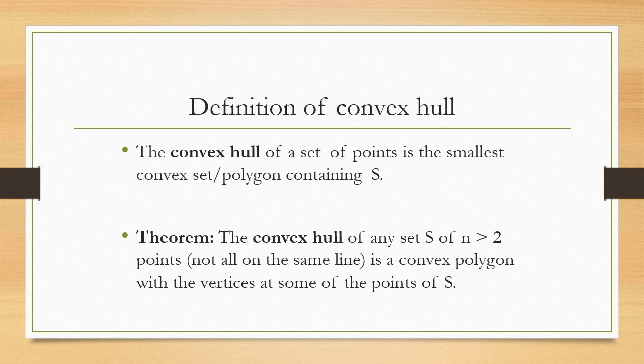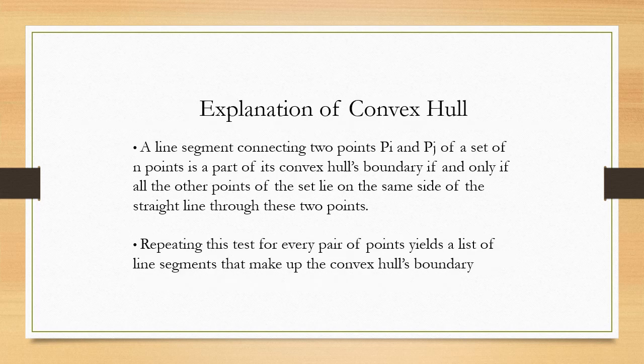This is the explanation of convex hull. A line segment containing two points Pi and Pj of a set of n points is a part of its convex hull boundary if and only if all the other points of the set lie on the same side of the straight line through these two points. Repeating this for every pair of points gives the line segments that make up the convex hull boundary.